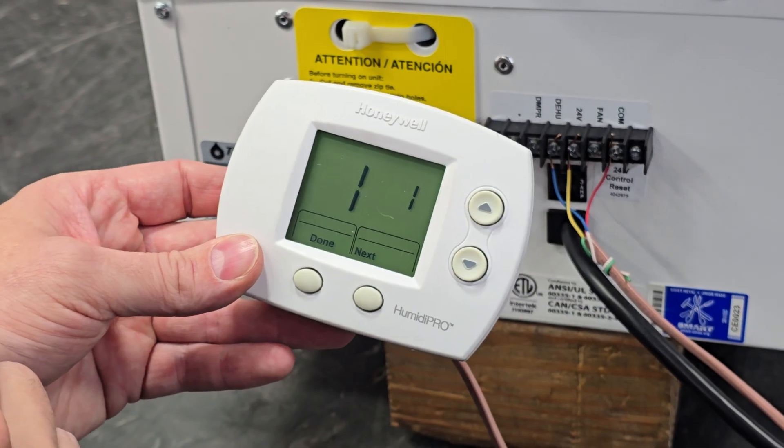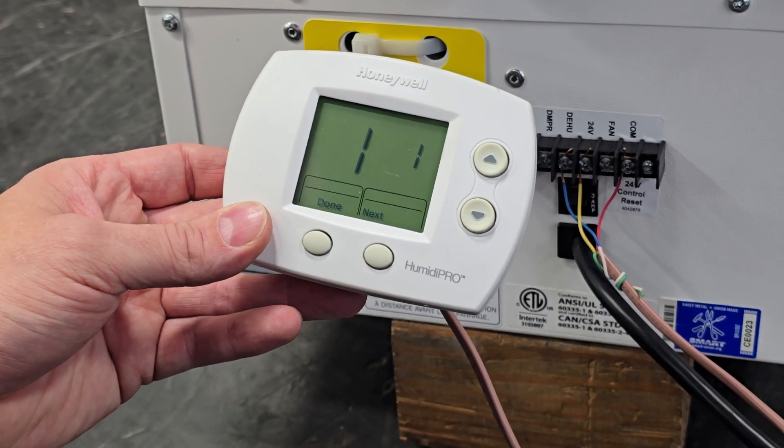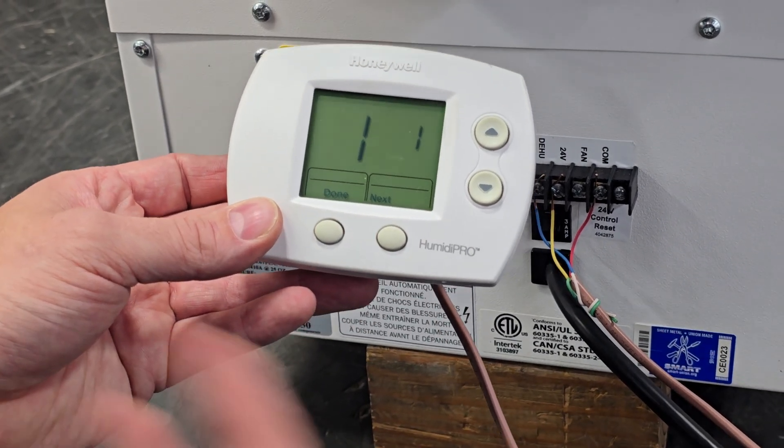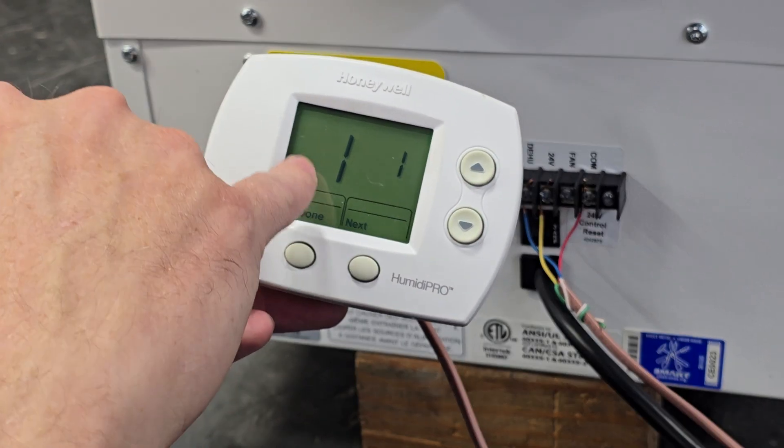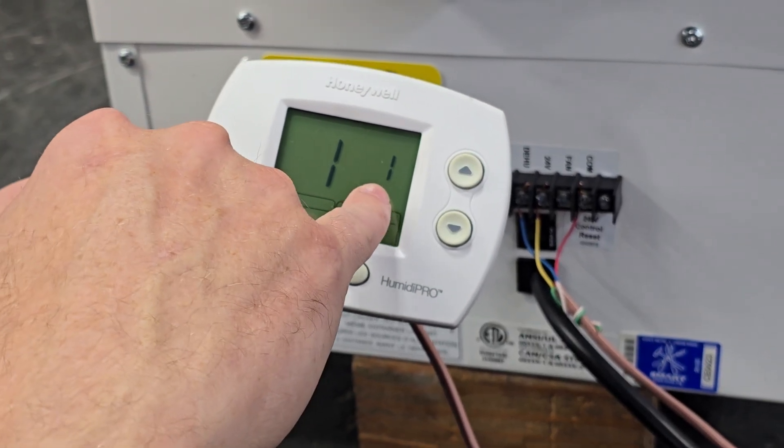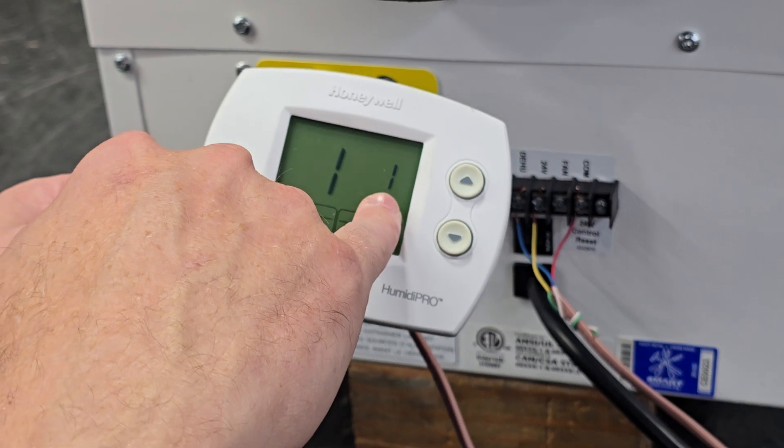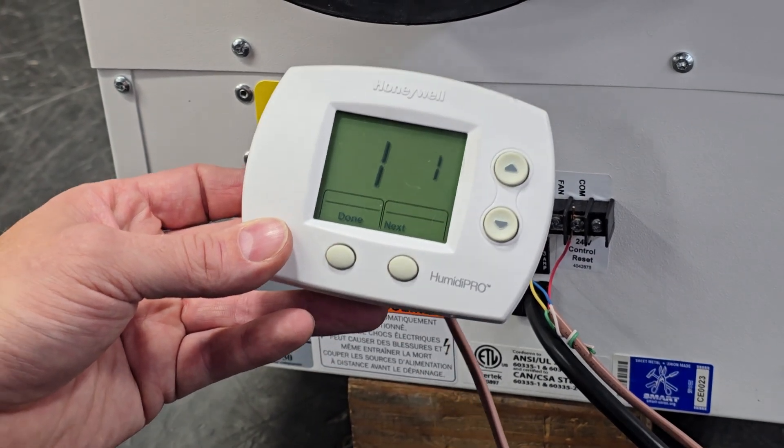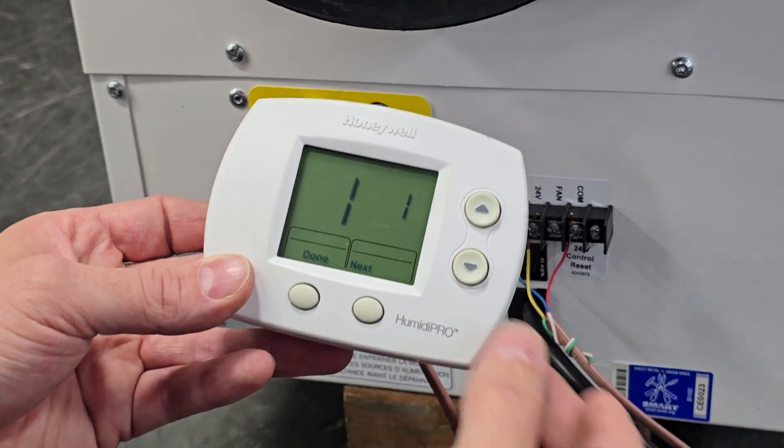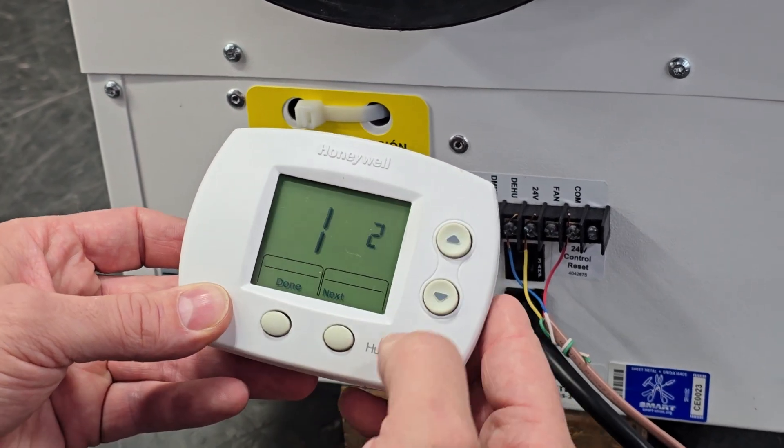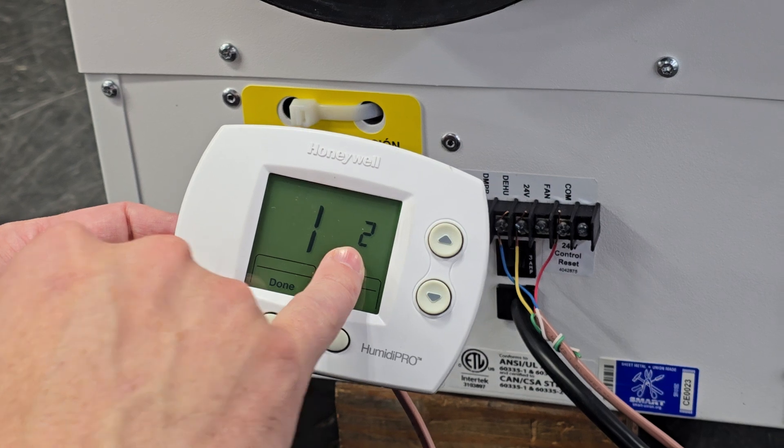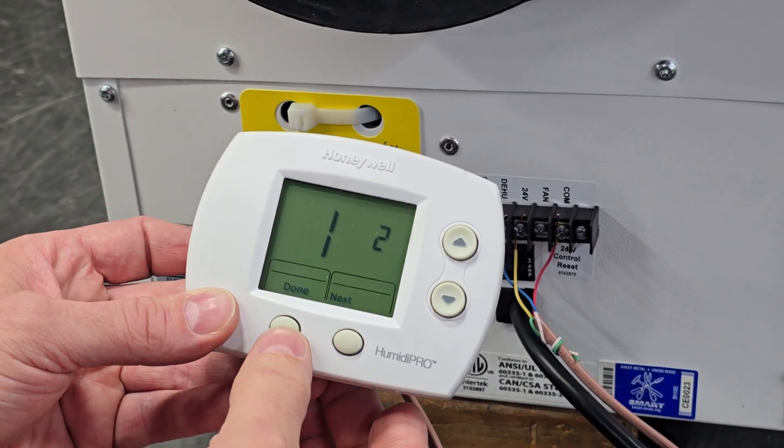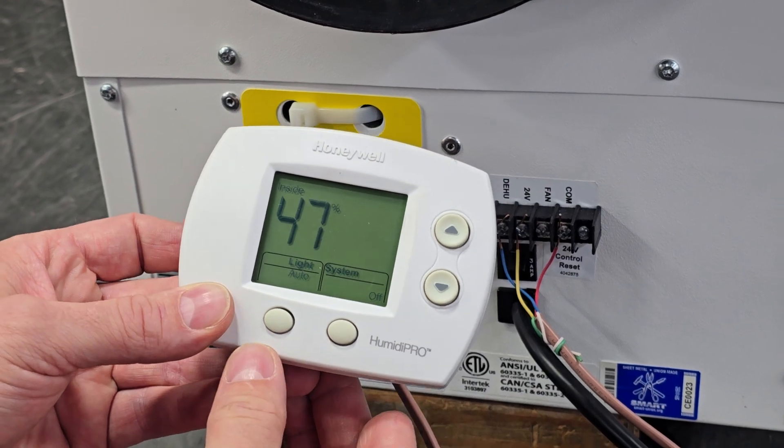These are codes for the different type of control function you want. This is the first function, this is the code on that function. It's set to 1. 1 is actually for a humidistat, so if you're using a humidifier. We're using a dehumidifier, so we want to change that to the number 2. That changes it to a dehumidistat that will operate the dehumidifier. So once we got that done we'll hit done.